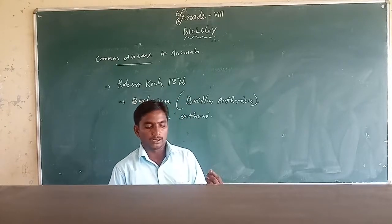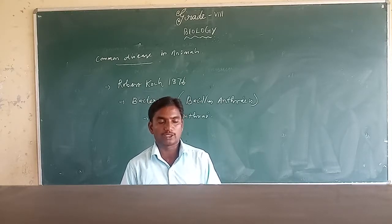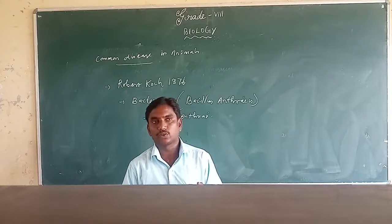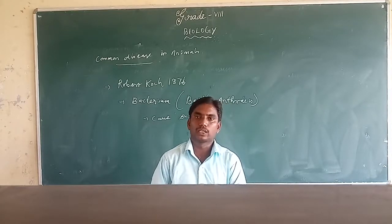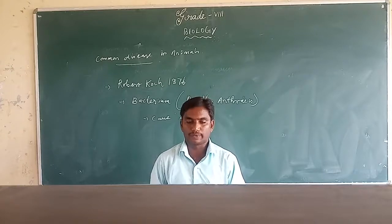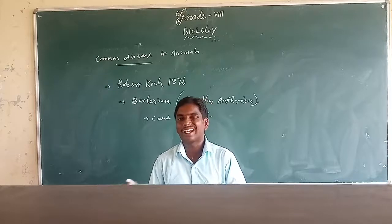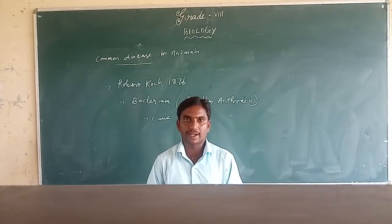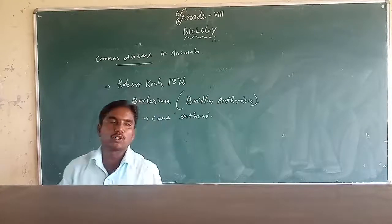The next plant disease is yellow vein mosaic of okra. This is a virus disease, and it spreads through insects. If we cannot control these diseases, the overall yield will be reduced.